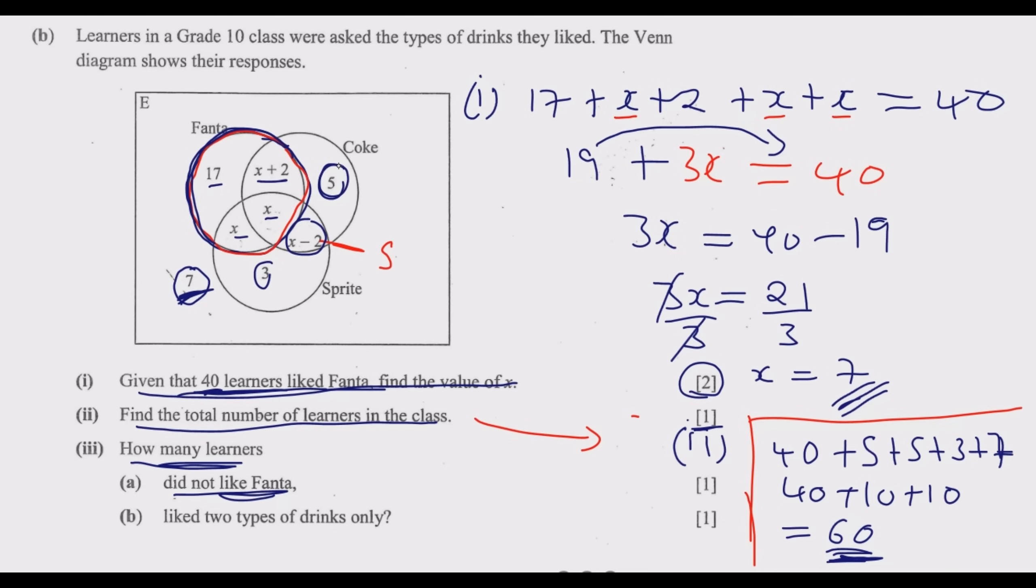What you can do is add this 5 plus this 5 plus this one plus that one - you end up with 20. Part iv: How many learners liked two types of drinks only? So we need to look for these parts.